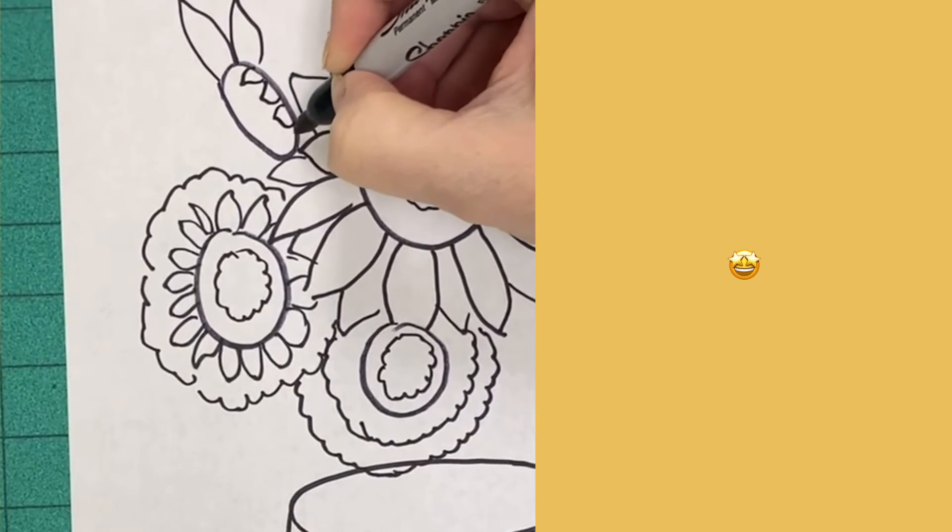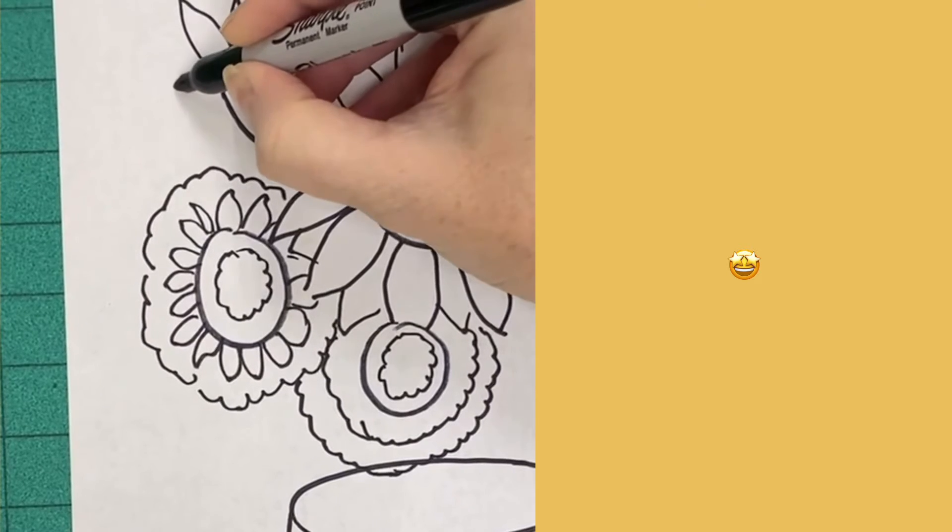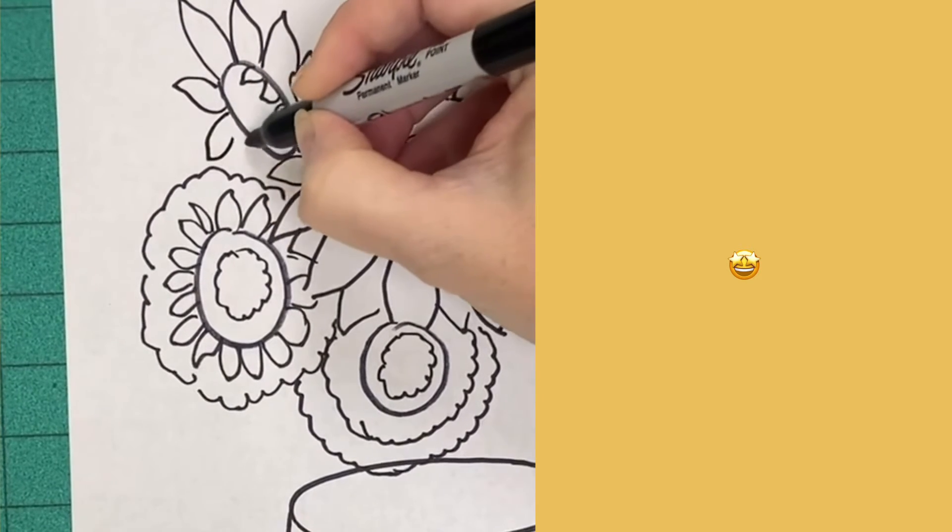So I'm just going to kind of tuck in my big petals right behind it and the petals that are on the farthest side are going to be shorter.